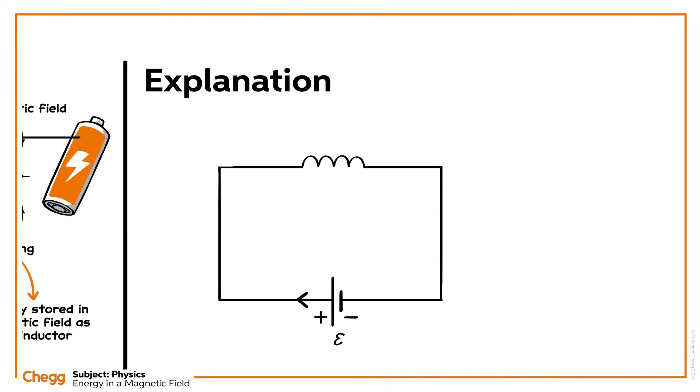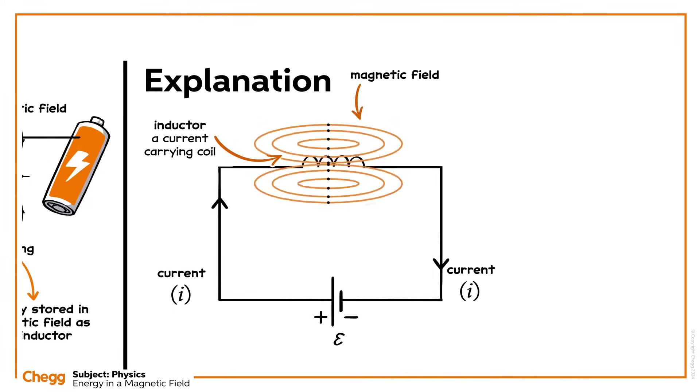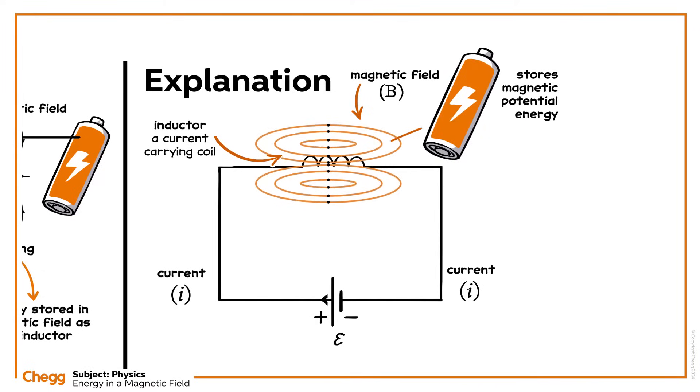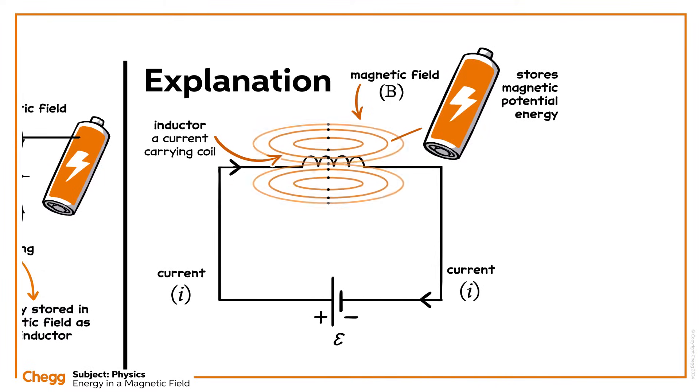Here's a typical inductor, a current-carrying coil. As current passes through it, work is done to establish a magnetic field around the inductor. The magnetic field stores energy, magnetic potential energy to be specific.